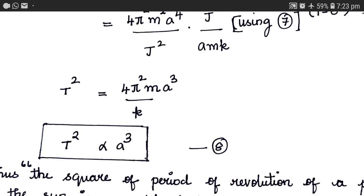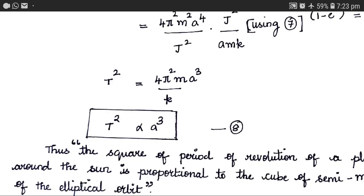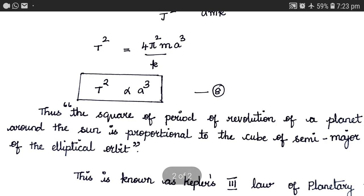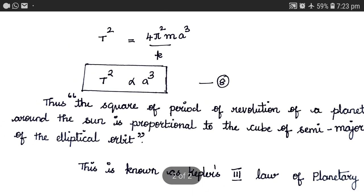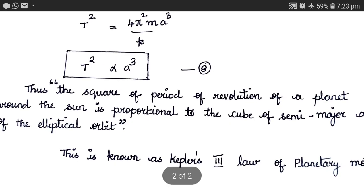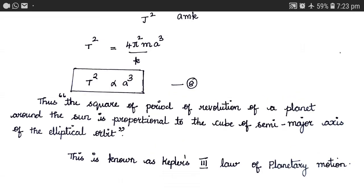Here, T is the time period of the elliptical orbit and a is the semi-major axis of the ellipse. Thus, equation 8 represents Kepler's third law of planetary motion, which can be stated as: the square of the period of revolution of a planet around the sun is proportional to the cube of the semi-major axis of the elliptical orbit of the planet. There are many derivations available for this law, but this approach is very simple and helpful for students.